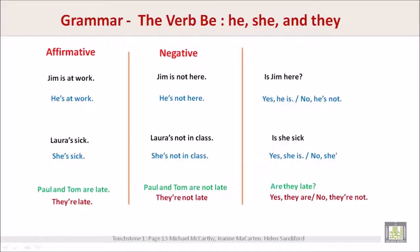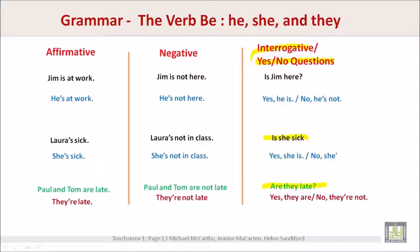Paul and Tom are not late — they're not late. The interrogative, yes or no questions: Is Jim here? Yes, he is. No, he's not. Is she sick? Yes, she is. No, she's not. Are they late? Yes, they are. No, they're not.